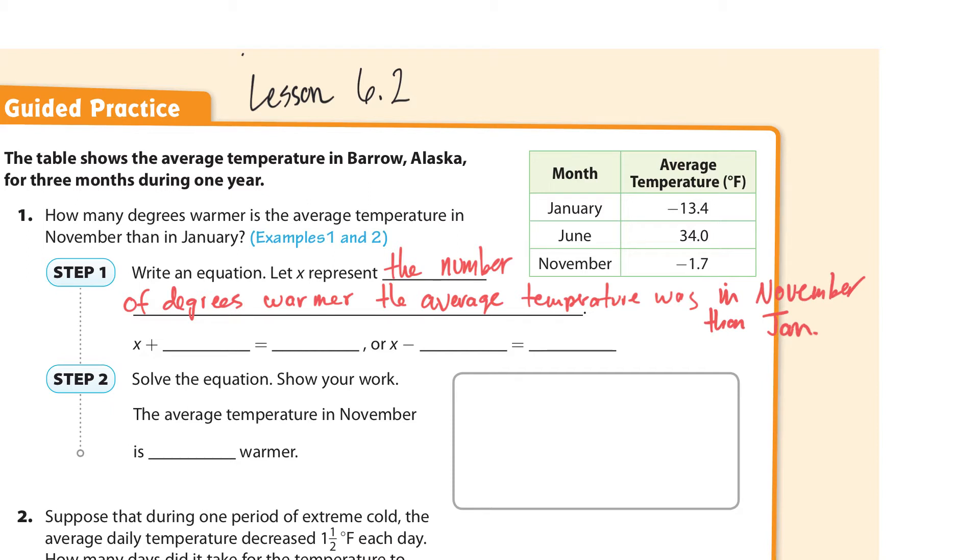So what we can do is we can take our x, so how many degrees warmer was it, and then we have to add our, well, I think of it as we're starting in January, which is negative 13.4. And then we're adding some degrees to make it warmer. And then it ended up in November, it was negative 1.7 degrees, which is still pretty cold. Now, adding a negative is the same thing as just subtraction. So instead of plus negative 13.4, we'll just call it minus 13.4. And that has to equal the same negative 1.7 degrees in November.